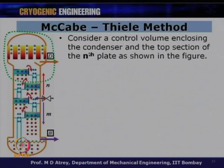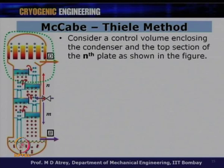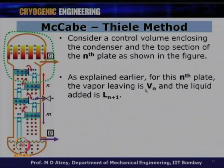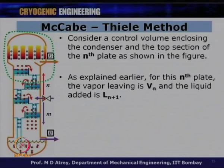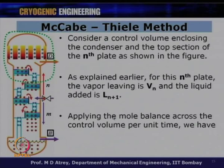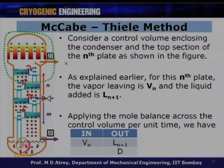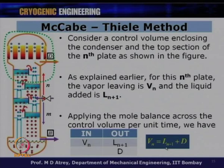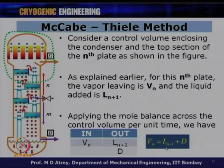Applying the mole balance across this control volume: what enters is Vn, and what leaves is D plus Ln+1. So: Vn = Ln+1 + D. This makes sense — whatever vapor goes up equals the condensate received at the top plus the liquid coming back down. Multiplying by mole fractions for component balance gives the component mole balance for a specific component, say nitrogen.